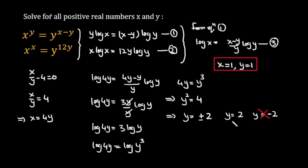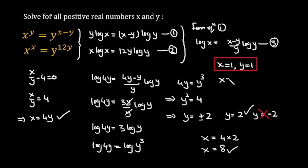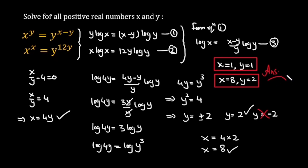Substituting y equals 2 back: x equals 4 times 2, so x equals 8. We now have two solutions: x equals 1 with y equals 1, and x equals 8 with y equals 2. I hope you liked this video. Thanks for watching.